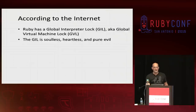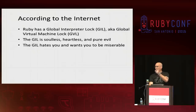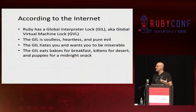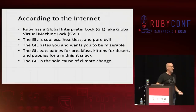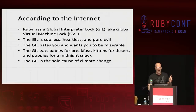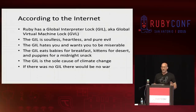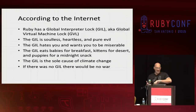According to the internet, here are a few things. Ruby has this thing called a global interpreter lock, also called a global virtual machine lock, or GVL. Here are a couple of factoids I picked up about the GIL: the GIL is soulless, heartless, and pure evil. The GIL hates you and it wants you personally to be miserable. The GIL eats babies for breakfast, kittens for dessert, and puppies for midnight snack. I'm pretty sure the GIL is the sole cause of climate change. But you're here, you're already sitting down — I've got like 40 more minutes. Let's look at some code.